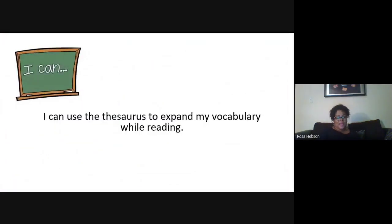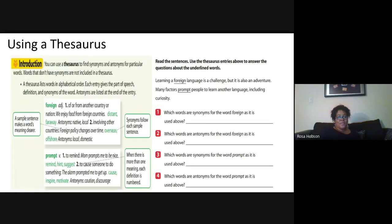The I can statement is I can use the thesaurus to expand my vocabulary while reading. You can use a thesaurus to find synonyms and antonyms for particular words. Words that don't have synonyms are not included in a thesaurus. A thesaurus lists words in alphabetical order. Each entry gives the part of speech, definition, and synonyms of the word. Antonyms are listed at the end of the entry.